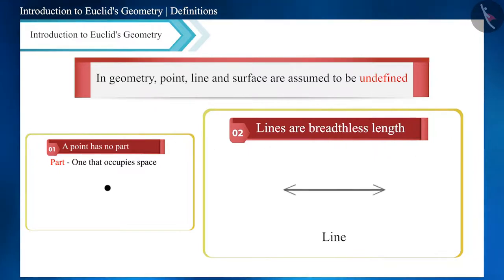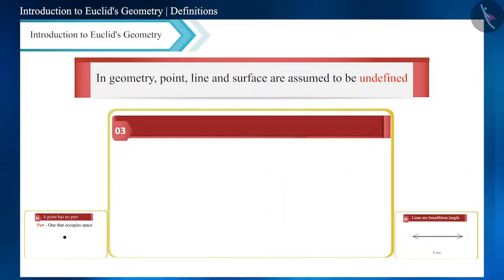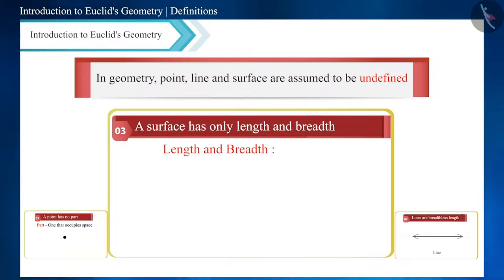Similarly, according to this definition of Euclid, a surface is one that has only length and breadth. Is it actually possible to have a surface that has only length and breadth? This is also not possible.